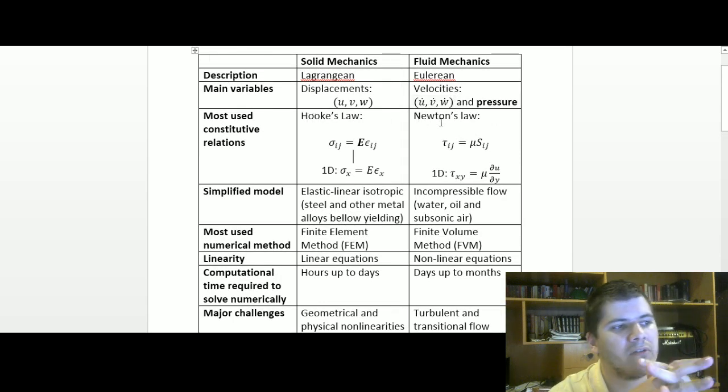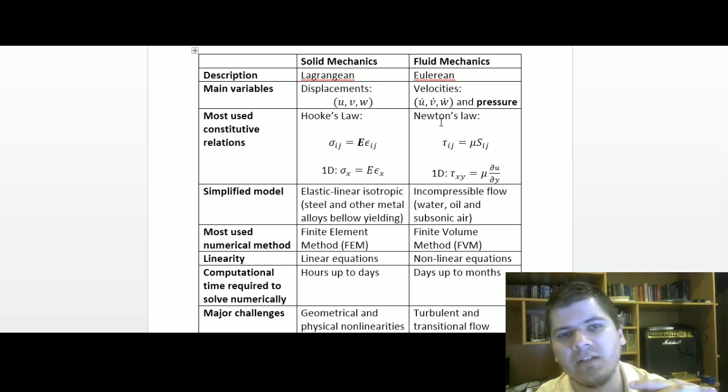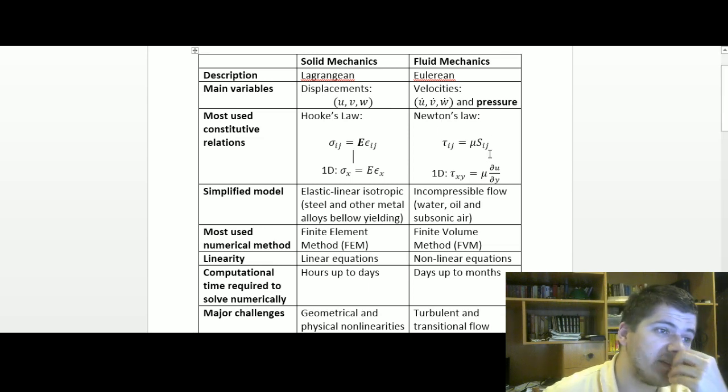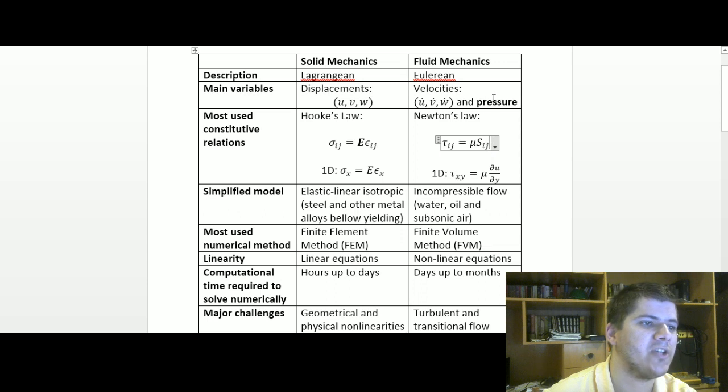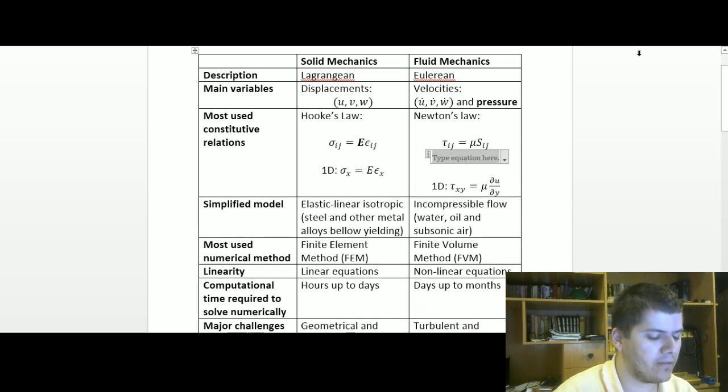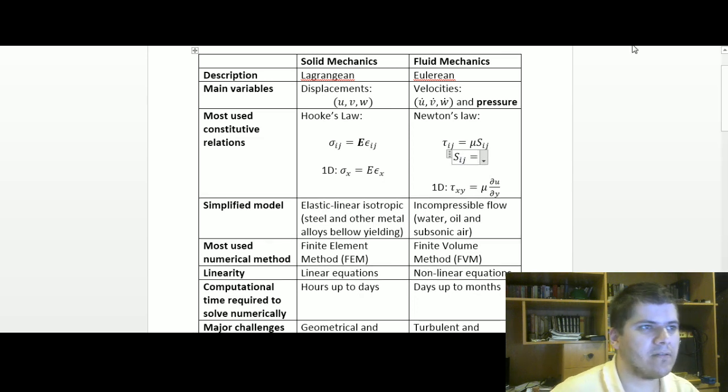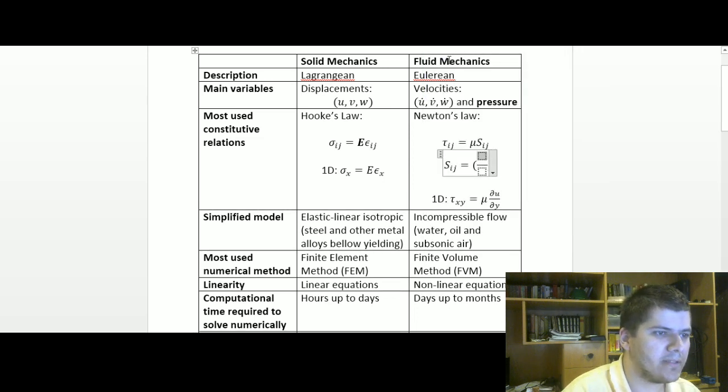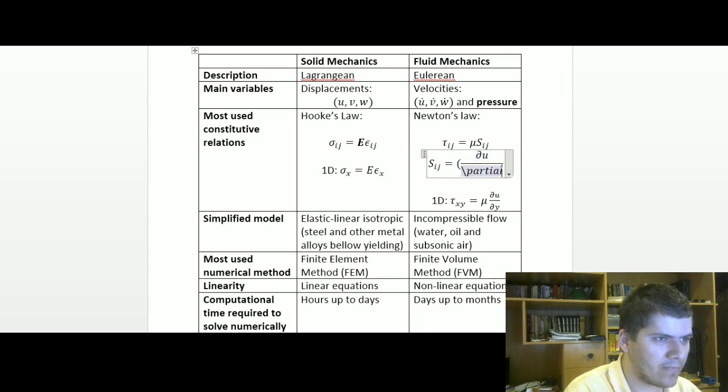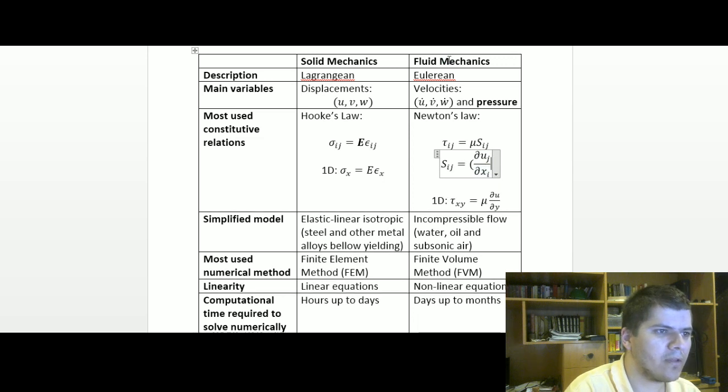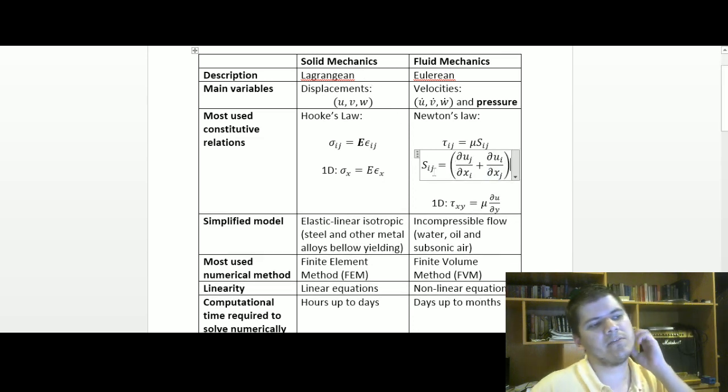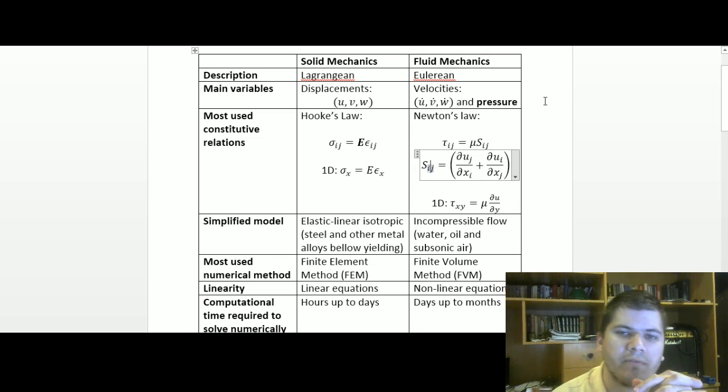Very similar to Hooke's law, we have also a linear relationship for flows which relates the shear stress in a fluid to its rate of strain. S sub ij is a tensor given by the velocity gradient plus its transpose. This is our strain rate of deformation tensor in fluid mechanics.